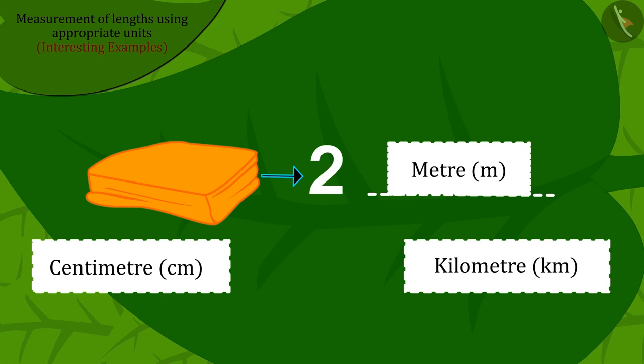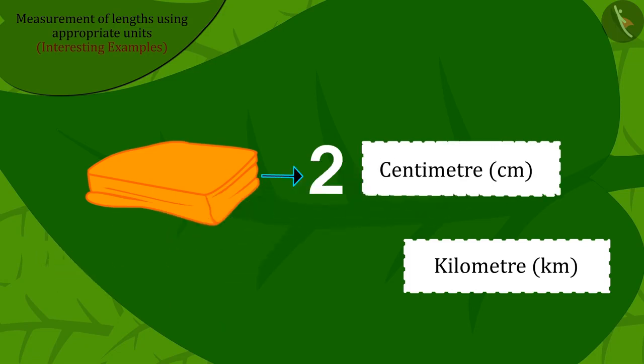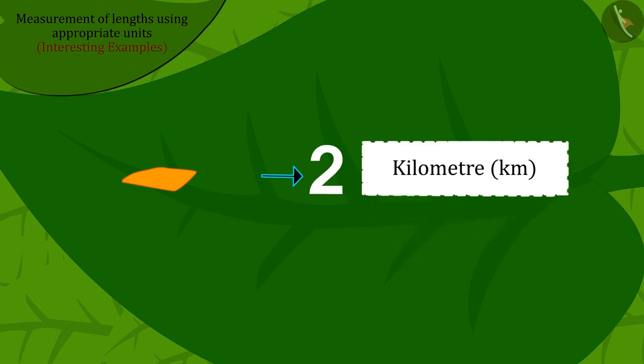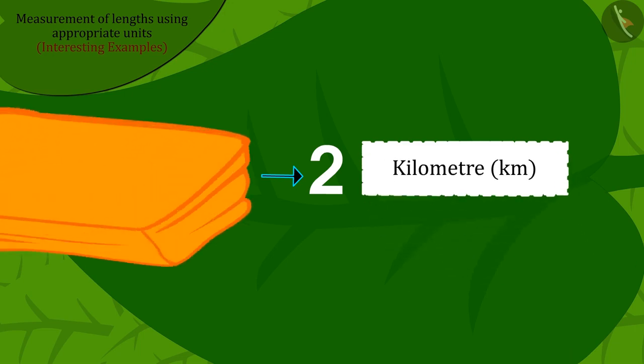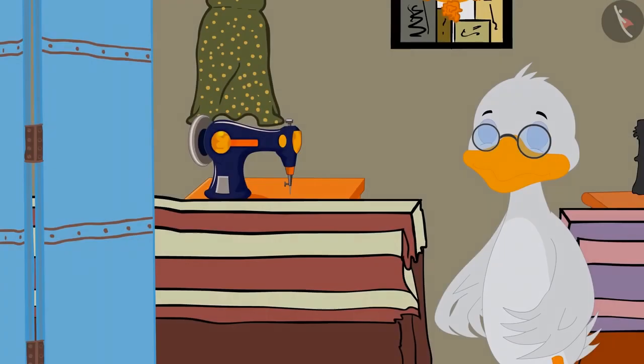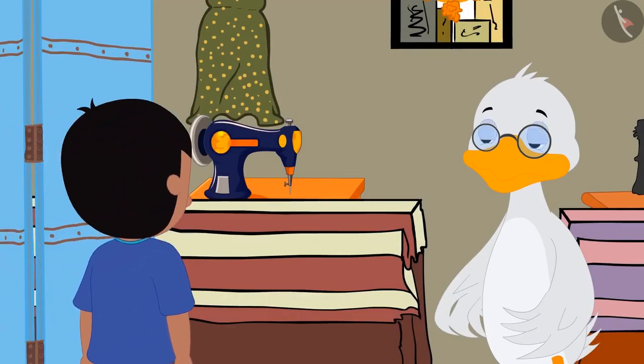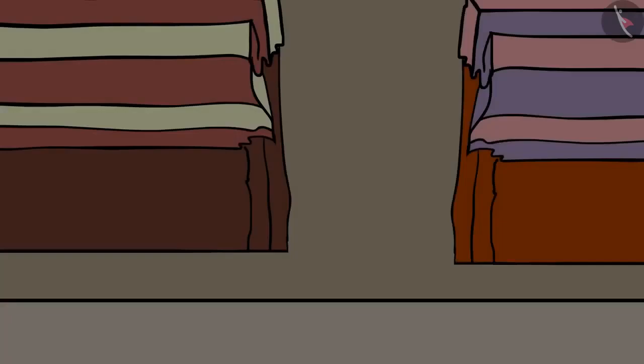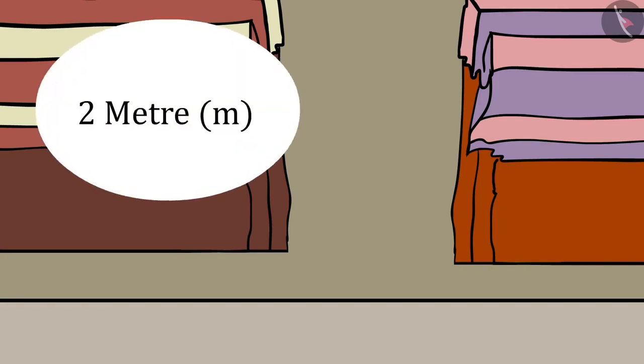Well done kids, your answer is absolutely correct. Raju should use meter for the piece of cloth for his father's shirt, because two centimeters would be too short and two kilometers would be too long. Raju immediately reached the uncle's shop and bought a two meter long cloth for his father.